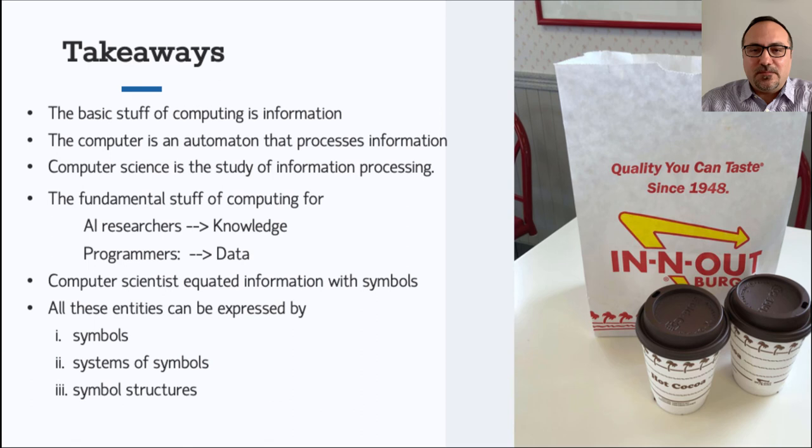So here are some takeaways for you. We started this taster lecture with a proposition that the basic stuff of computing is information. The computer is an automaton that processes information, and consequently computer science is the study of information processing. But we learned that while to an AI researcher the fundamental stuff of computing is knowledge, for a programmer it is data. Can we then reduce these three entities—information, data, and knowledge—to a common denominator?